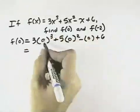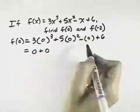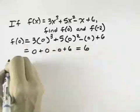The nice thing about 0 is that 0 cubed is 0 times 3 is 0, and also 0 squared is 0 times 5 is 0, minus 0, plus 6 will equal 6. That means f of 0 equals 6.